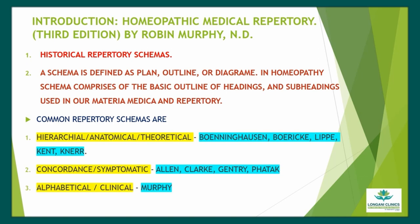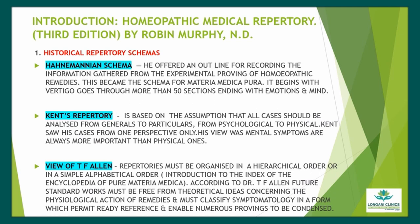Hahnemannian schema: He offered an outline for recording the information gathered from the experimental provings of homeopathic remedies. This became the schema for Materia Medica Pura. It begins with vertigo, goes through more than 50 sections, ending with emotions and mind. Kent's Repertory is based on the assumption that all cases should be analyzed from general to particulars, from psychological to physical. Kent saw his cases from one perspective only — his view was that mental symptoms are always more important than physical ones.